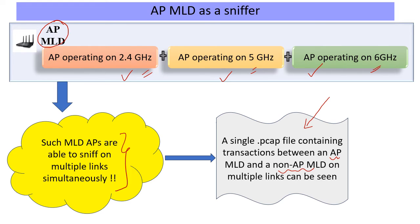As for the station side, we have not yet experimented fully there. Because APs are generally the higher-capable devices, we have gone with the AP side first for sniffing. So, what can we learn in this MLO context using a sniffer like this?